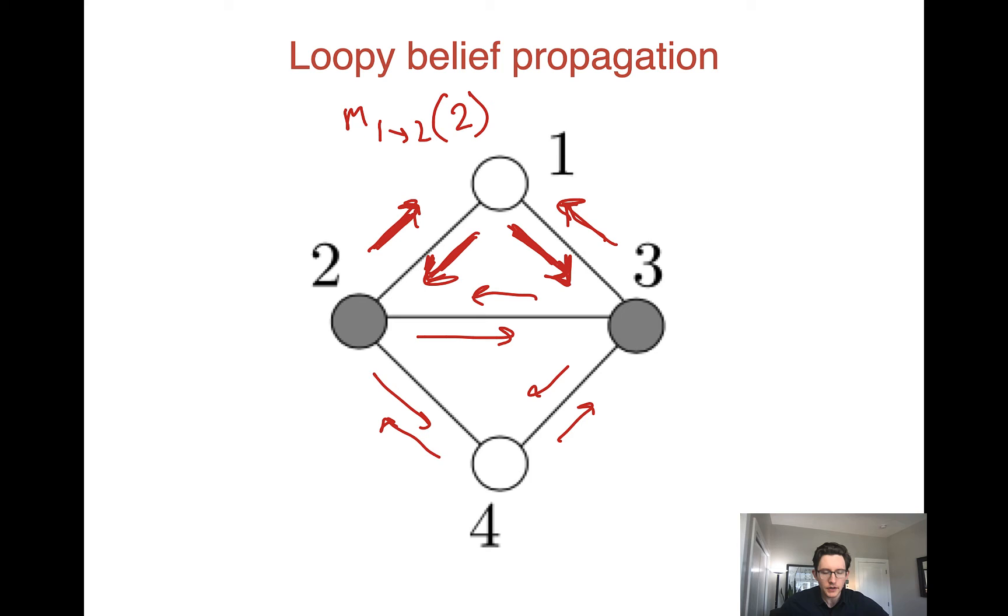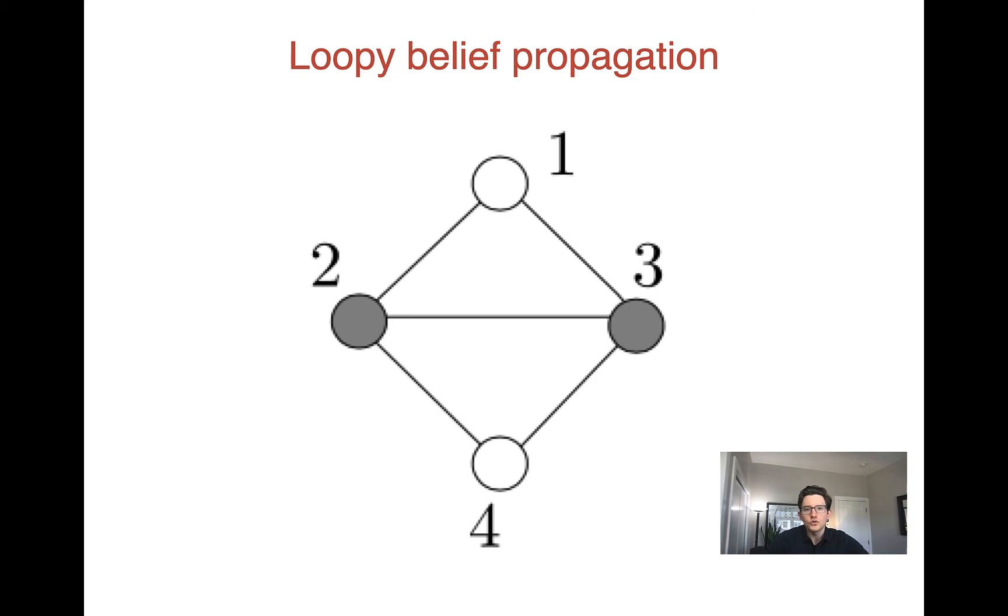We do the same thing over again, update all the messages. We might not get the same values because the messages we used to calculate the previous messages, those change so we might get new messages in our iteration number two. We iterate until we converge. So that's an algorithm. We can run it.